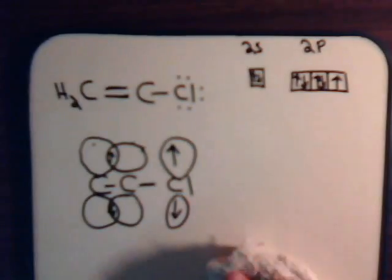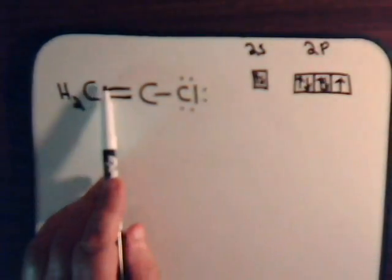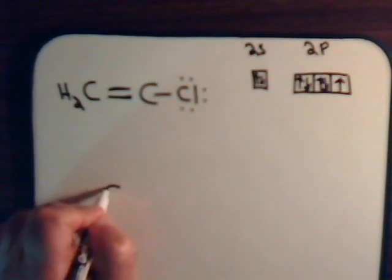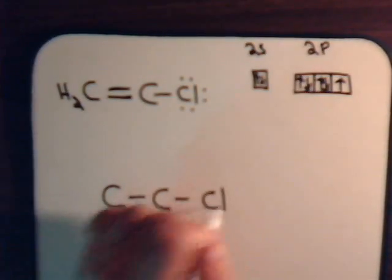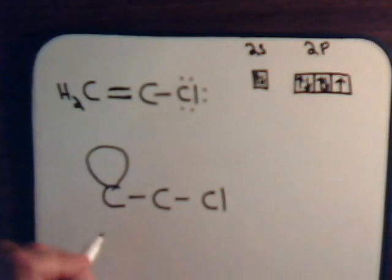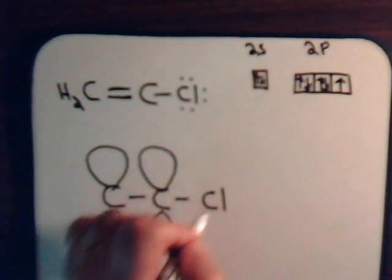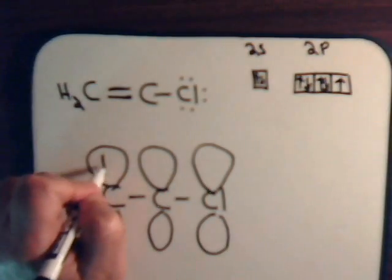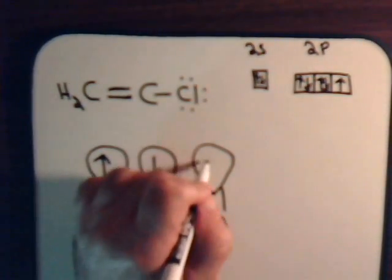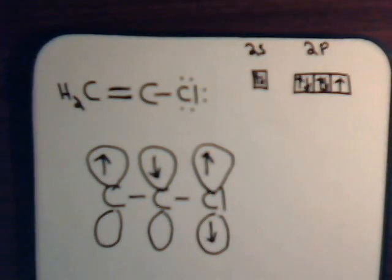So the situation is more like this. There's not a really overlapping, a lateral overlapping as you have with a genuine pi bond, but rather something like this. And this has a lone pair of electrons, the chlorine does. And you have this electron delocalization.